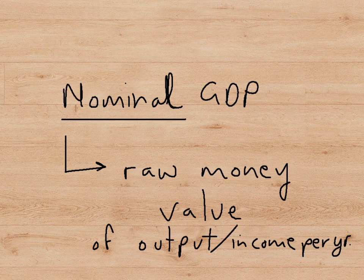These numbers — 2 trillion, 15 trillion, et cetera — are simply what we call nominal GDP. That means it's just the raw money value of everything that was produced or earned in those economies in one year. So roughly speaking, the total raw money value of everything produced in the UK in one year is roughly 2 trillion dollars, whereas the raw money value of everything produced in the USA is roughly 15 trillion dollars.